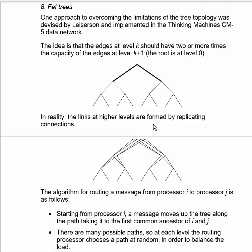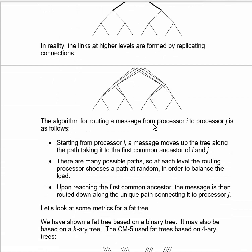So this means that you don't have that bottleneck at the root, and also it means that your bisection bandwidth is proportional to the height of the tree. So those are two very important properties.